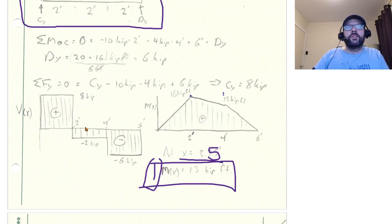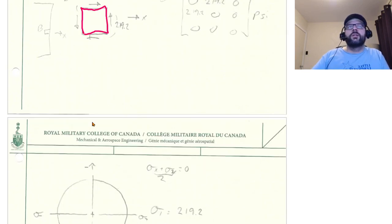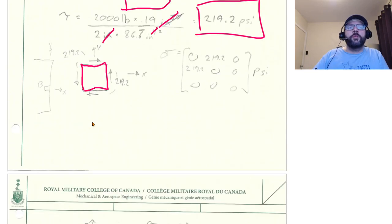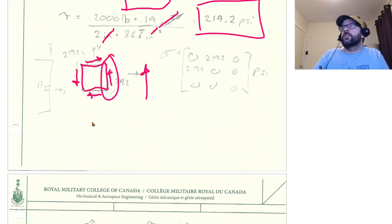So that means that essentially on this side, on the left hand side of the cube we're pushing down, on the right most side of the cube again it needs to be pushed up to resist that and then like that on the top and the bottom. Which means that on the positive x face there's a force in the positive y direction which means that this is a positive shear stress.